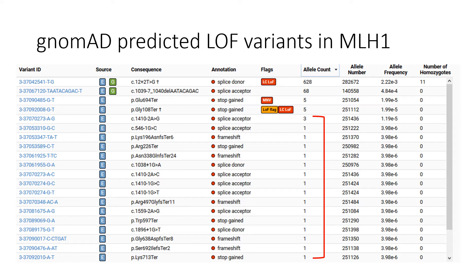Let's take a look at MLH1 as an example, which is considered a highly penetrant gene causative of Lynch syndrome, an autosomal dominant disorder causing adult onset colorectal, endometrial, and other cancers. This screenshot shows us the several MLH1 variants present in gnomAD categorized as being predicted loss of function, or pLOF.